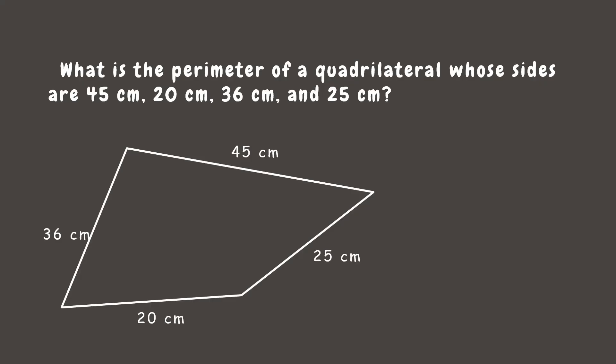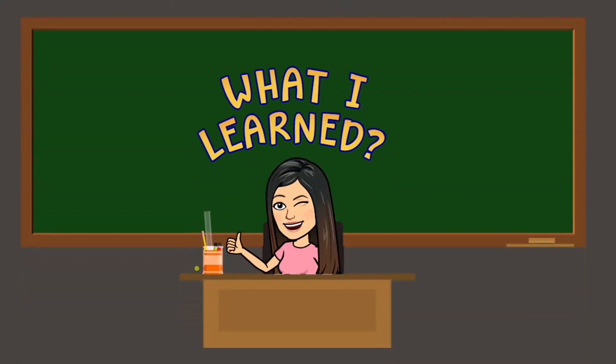Again, how do we get the perimeter? That's right, we add them up. So that's 45 plus 20 plus 36 plus 25 is 126 centimeters. This means the perimeter of this shape is 126 centimeters. Great job everyone!